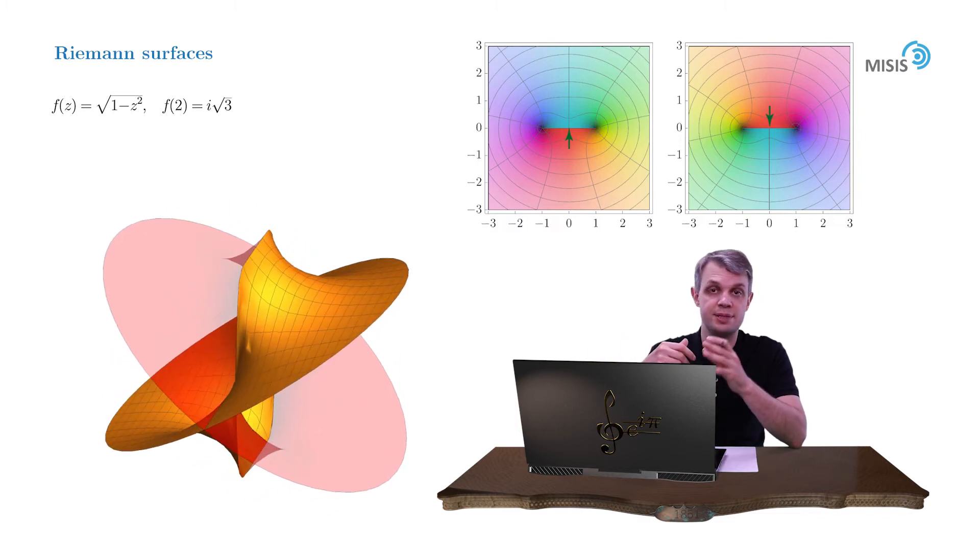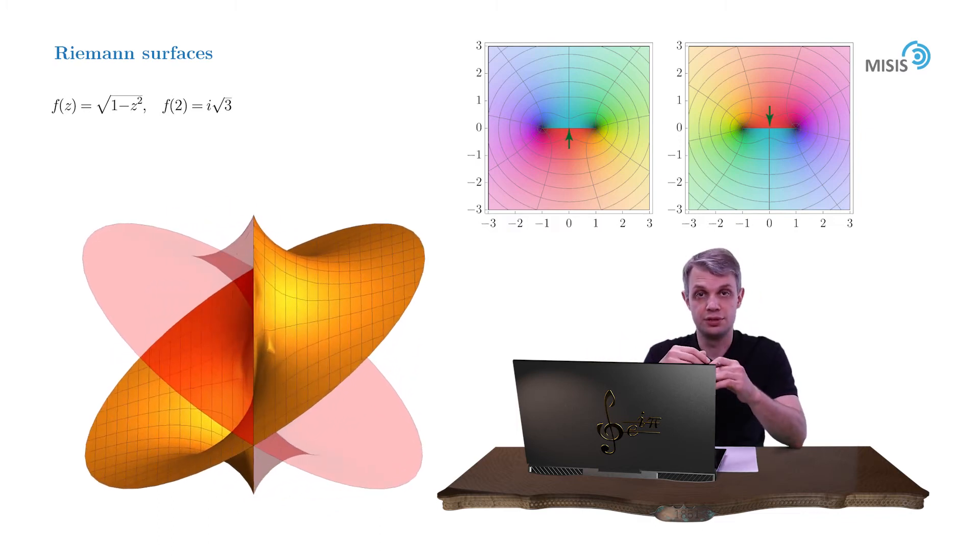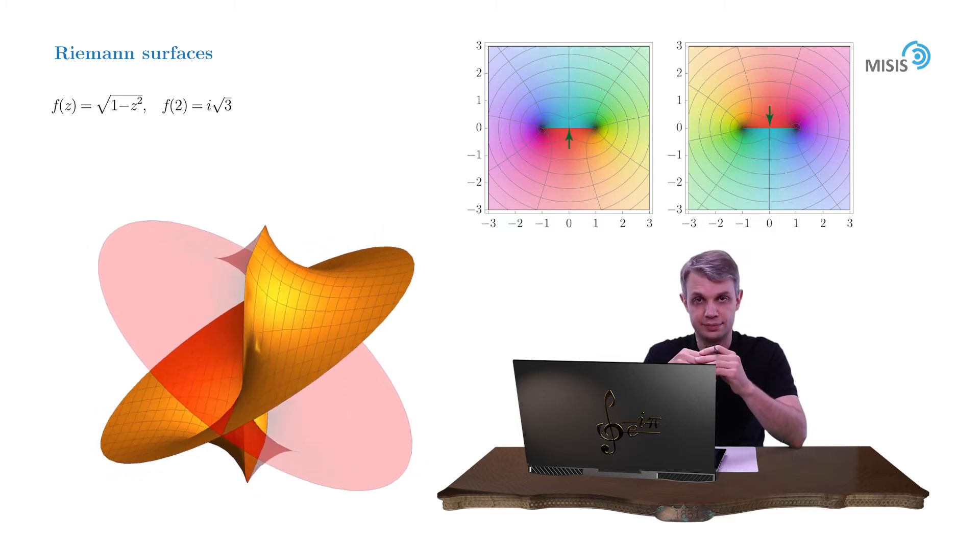And here again pay attention that despite self intersections you can slip from one sheet to another only through the branch cut. So be careful.